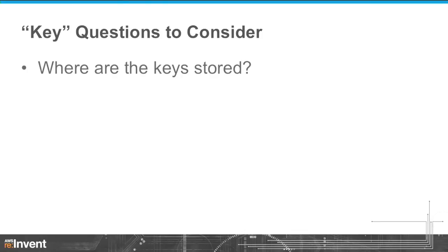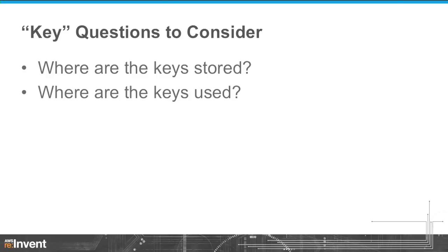The first is: where are encryption keys stored? Are they stored in systems that you manage inside your data center on premises? Or are they stored in AWS on systems that we manage? The next question is: where are keys used? Where does the actual encryption happen? You've got the plain text data and the key — put it together with your favorite encryption algorithm. Is this happening on systems and processes that you own? Or is this happening in AWS?